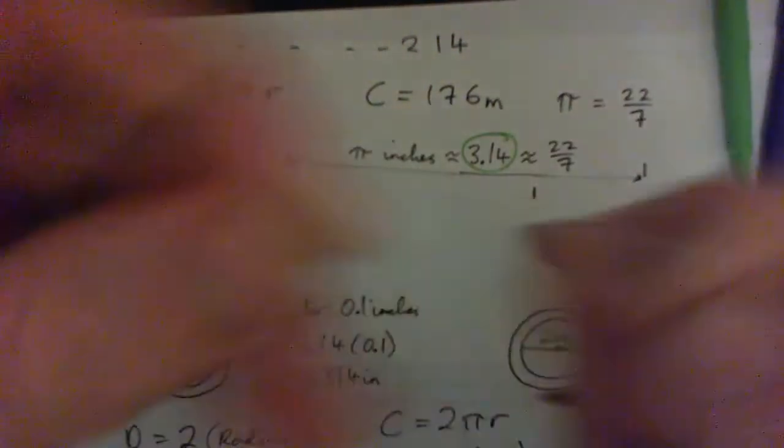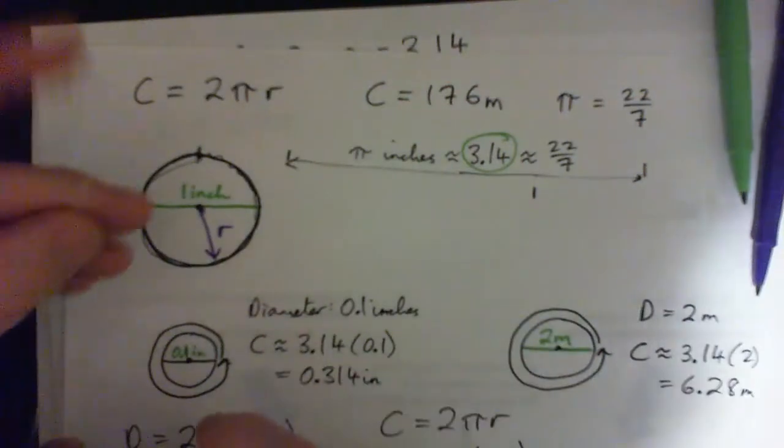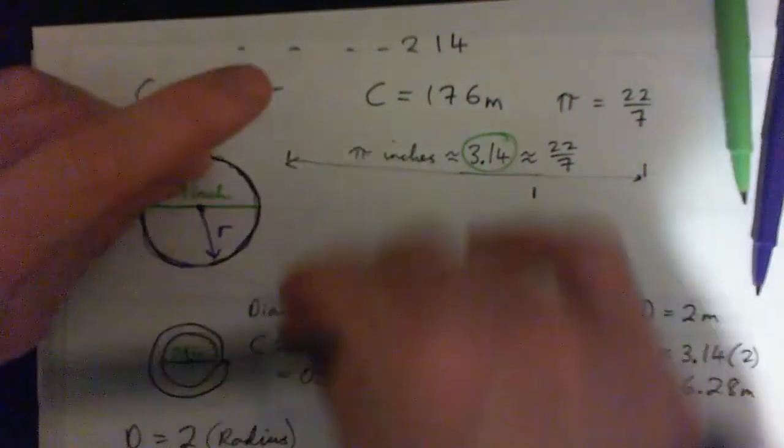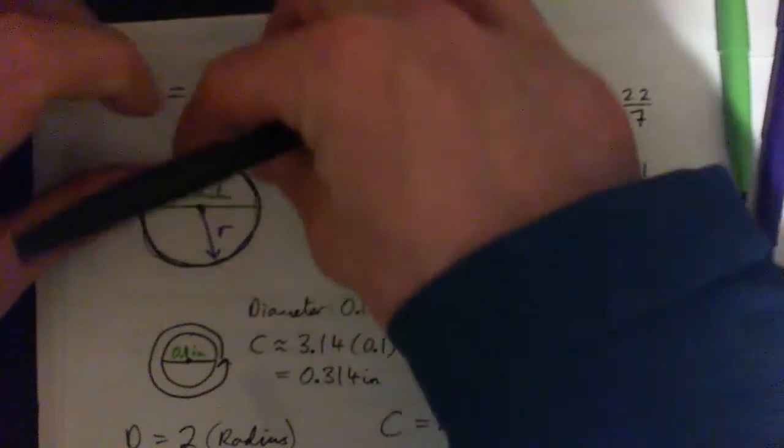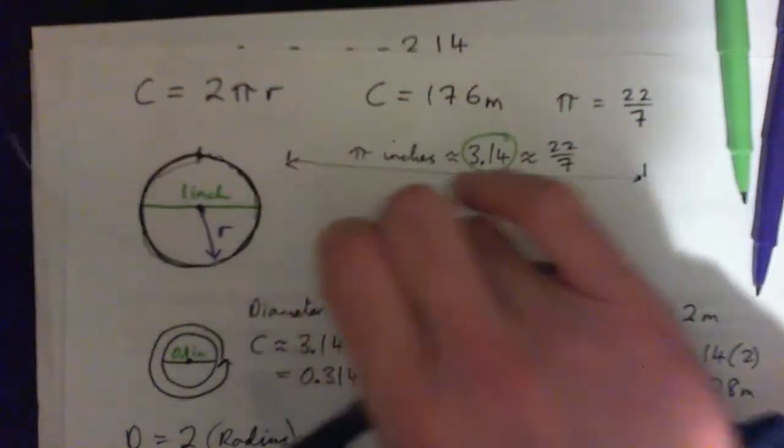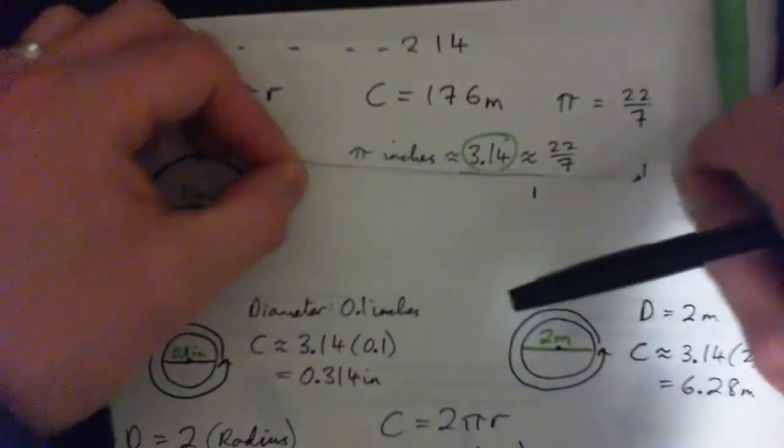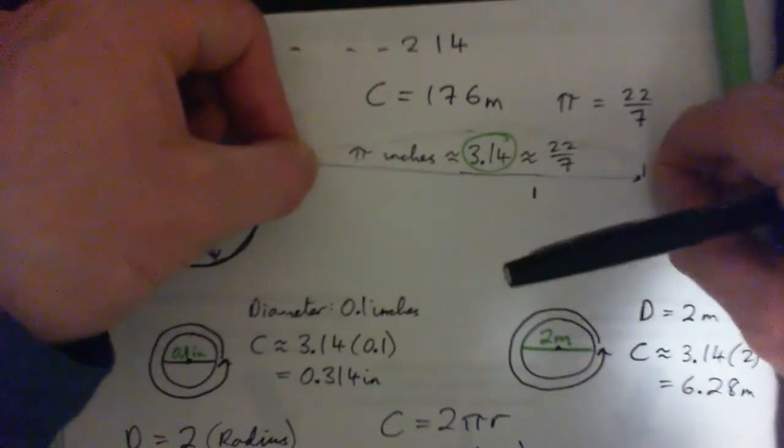if you tied a string all the way around. Here's a little string. Sorry, you can't see it very well, but it's a string. If I tied a string all the way around the circle, how long would the string be? Well, we talked about, if the diameter is an inch, then the length of the string would be about 3.14 inches.